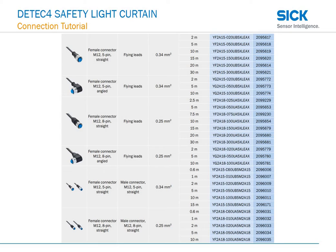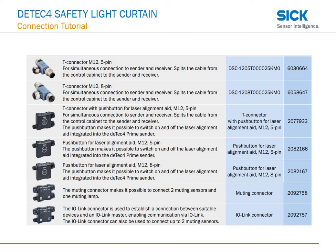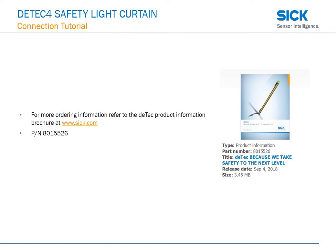After reviewing some different connection scenarios, you may be able to build up your connection profile. There are some M12 connecting cables, and there are options for T-connector, push buttons for laser alignment, and also the muting connector and the IO-Link connector. For more ordering information, you can refer to the DTEC product information brochure.